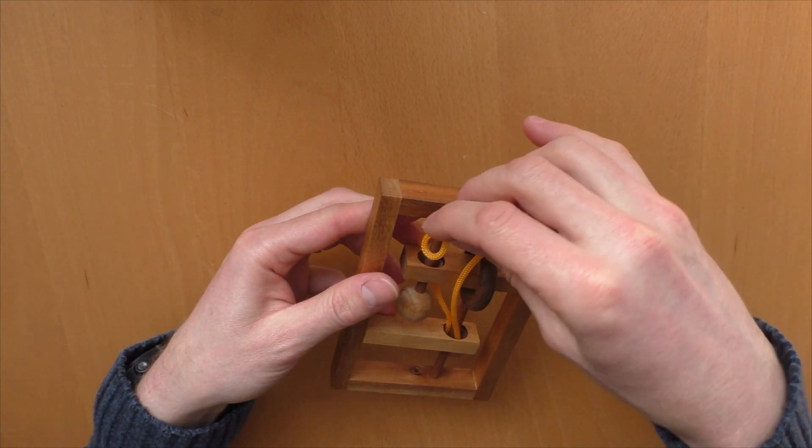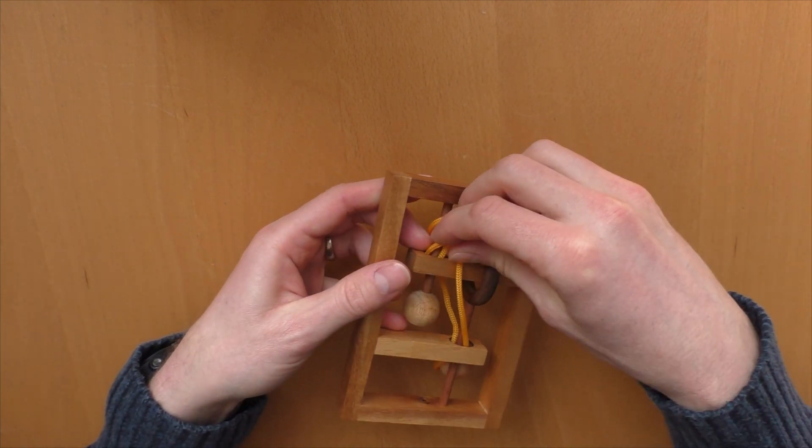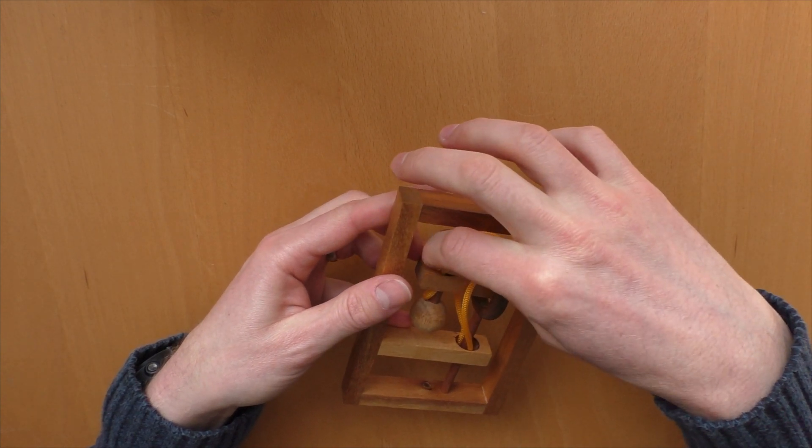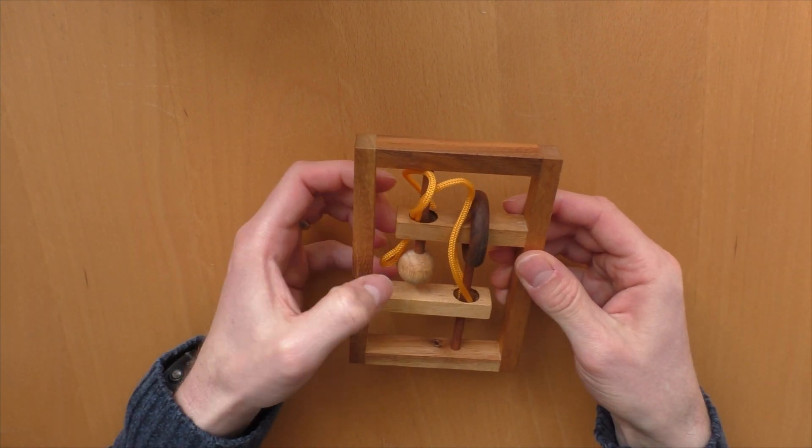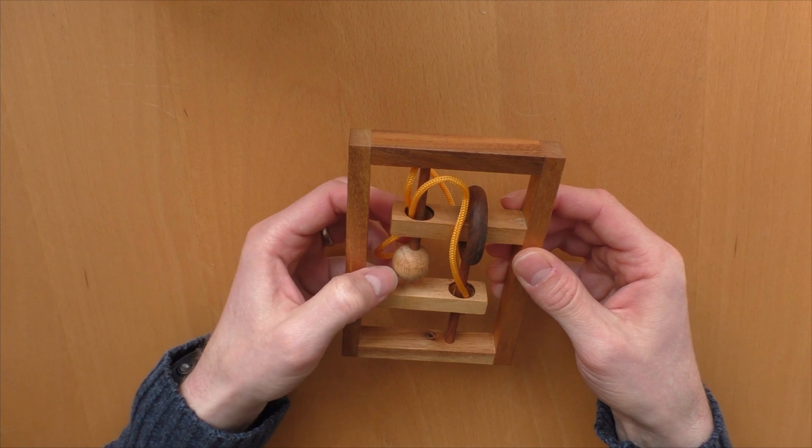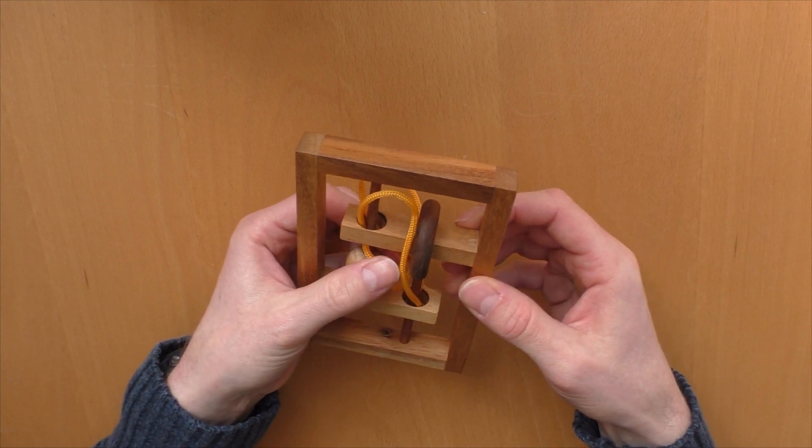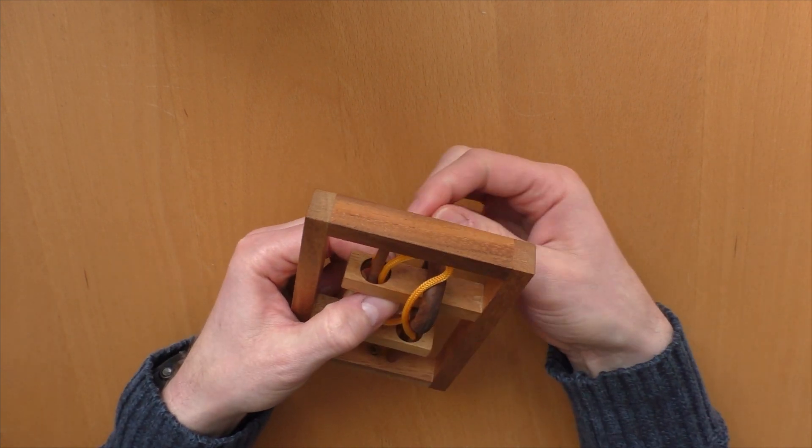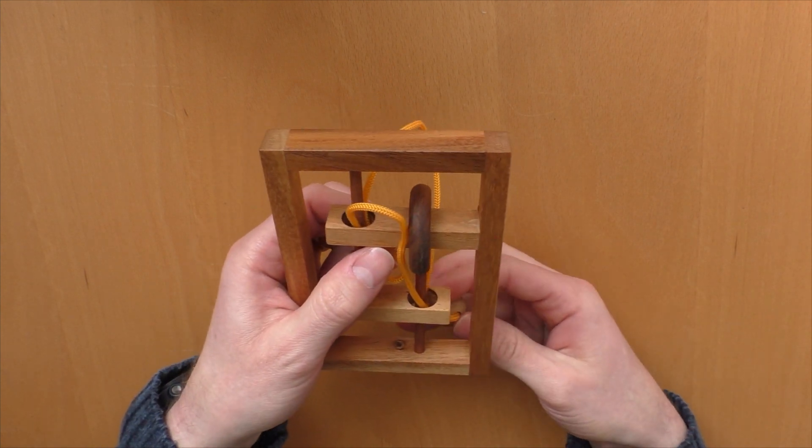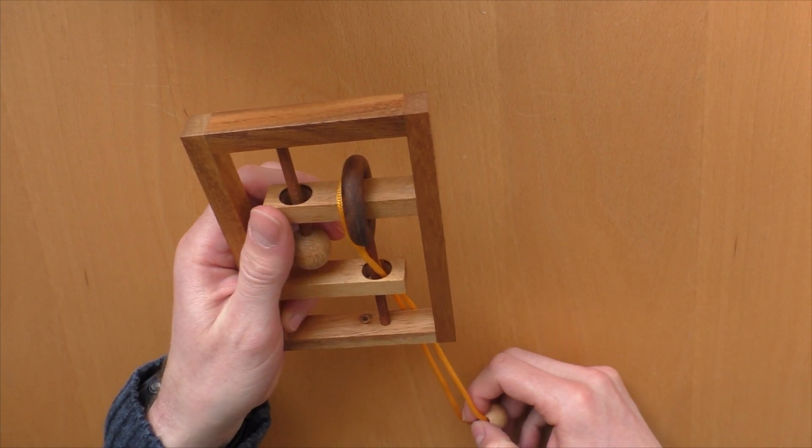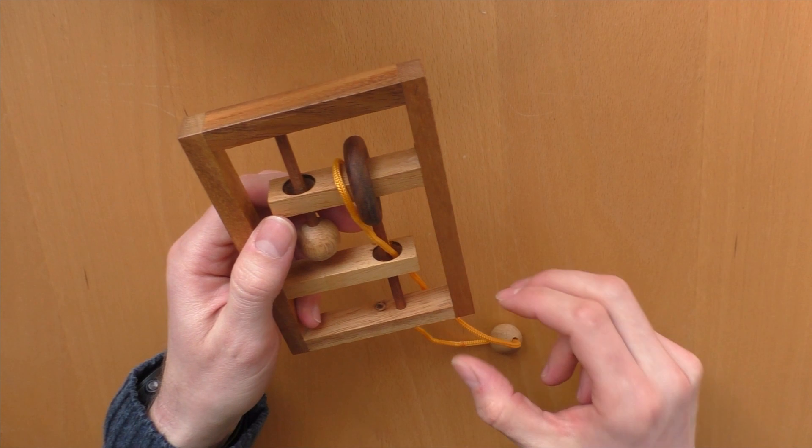Then we take the cord, put it from the top here through the hole, and around the wooden ball. And then we pull it back all the way. We have it over here.